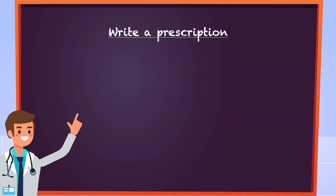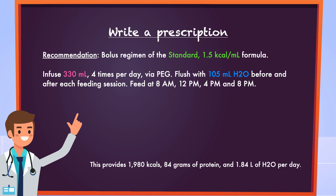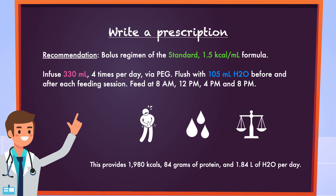Now we are ready to write a prescription. We recommend a bolus regimen of the standard 1.5 calorie formula: infuse 330 milliliters 4 times per day via PEG, and flush with 105 milliliters of water before and after each feeding session. Feed at 8 a.m., 12 p.m., 4 p.m., and 8 p.m. This provides a total of 1,980 calories, 84 grams of protein, and 1.84 liters of water per day. The prescription should be followed by monitoring of weight status, fluid status, and tolerance, and adjusted as needed. If an intermittent feeding regimen were chosen instead, the only thing that would really change is specifying how long each feeding session should last.